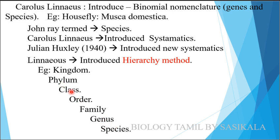The taxonomic hierarchy is: Kingdom, Phylum, Class, Order, Family, Genus, Species. This is the hierarchy method introduced in classification.